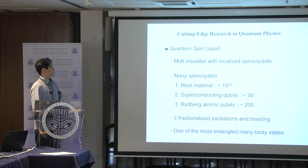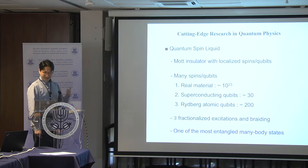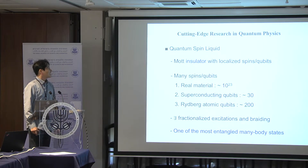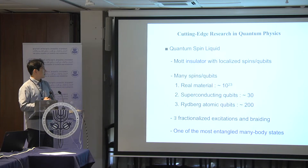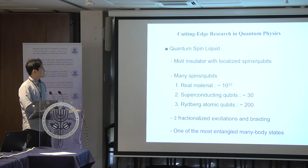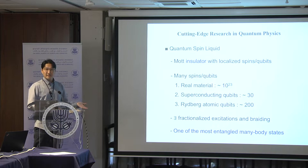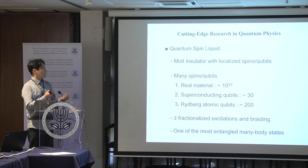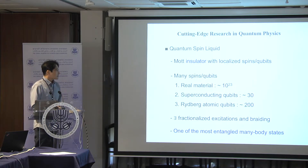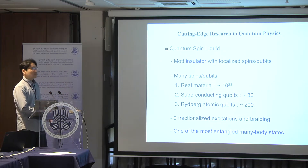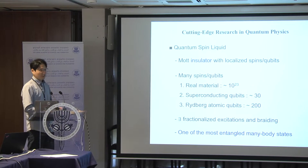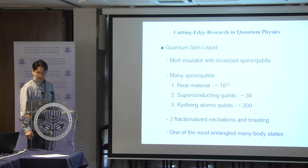So what is quantum spin liquid? This quantum spin liquid state is a many-body state. We have lots of qubits, and because of their entanglement we have some interesting many-body state. Especially this state is an insulator — electrically it's an insulator, so electrons or spins are not moving. It's a Mott insulator with localized spins and qubits. We need many spins — we cannot construct this quantum spin liquid ground state with one or two qubits; we need lots of qubits.